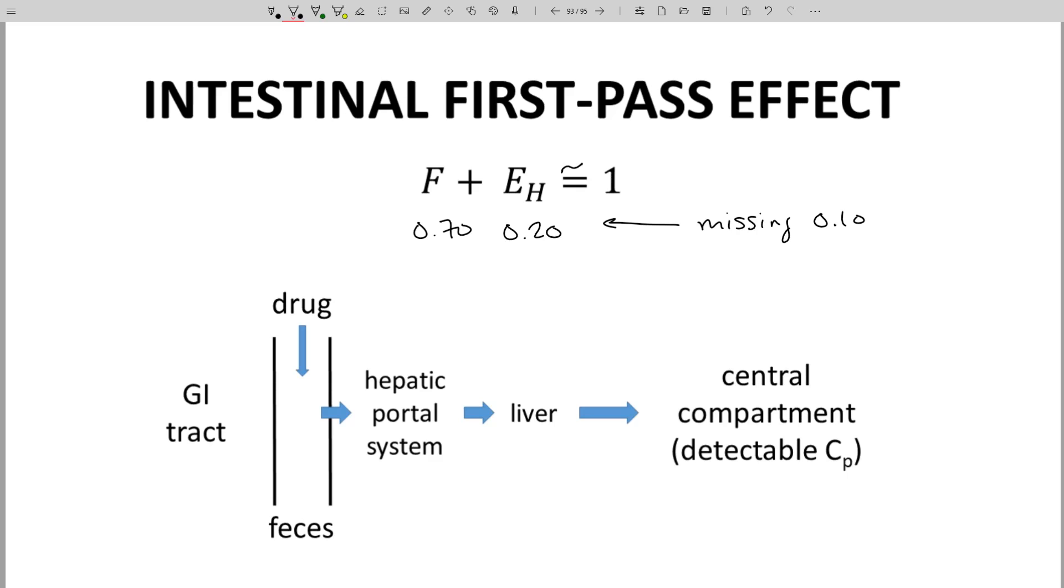To reach the plasma, the central compartment, a drug must cross the intestinal lining and pass through the liver. The effect of the liver shows up in our equation through EH. How about the intestinal wall?